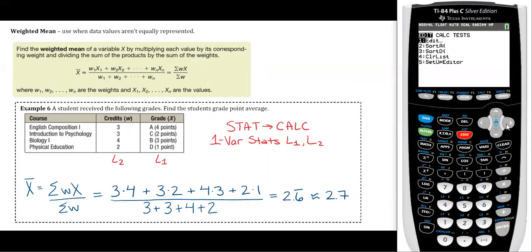And then stat, calc, one-var stats, L1 is your main list. Your frequency list is the same thing as the weights. Weights and frequencies, kind of just like two names for the same thing. So put L2 there, and then calculate. x̄ is 2.666 repeating. Sure enough, that's what we got when we did it by hand. So when you round to one decimal place, you get 2.7.